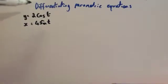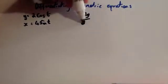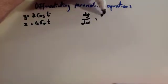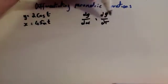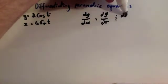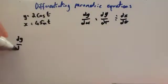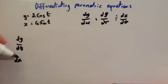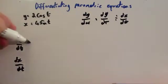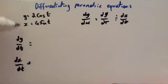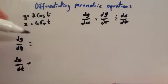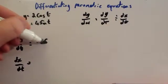Now we have y equals 2cos(t) and x equals 4sin(t), and we want to find dy/dx. Again we do dy/dt divided by dx/dt. So let's find dy/dt and dx/dt.